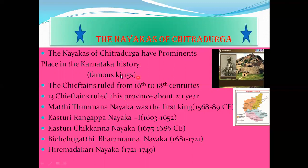Now we move to the Nayakas of Chitradurga. The Nayakas of Chitradurga have a prominent place in Karnataka history. The chieftains ruled from the 16th to 18th century — 13 chieftains ruled the province for about 211 years. Mathi Timbana Nayaka was the first king of the Nayakas of Chitradurga.